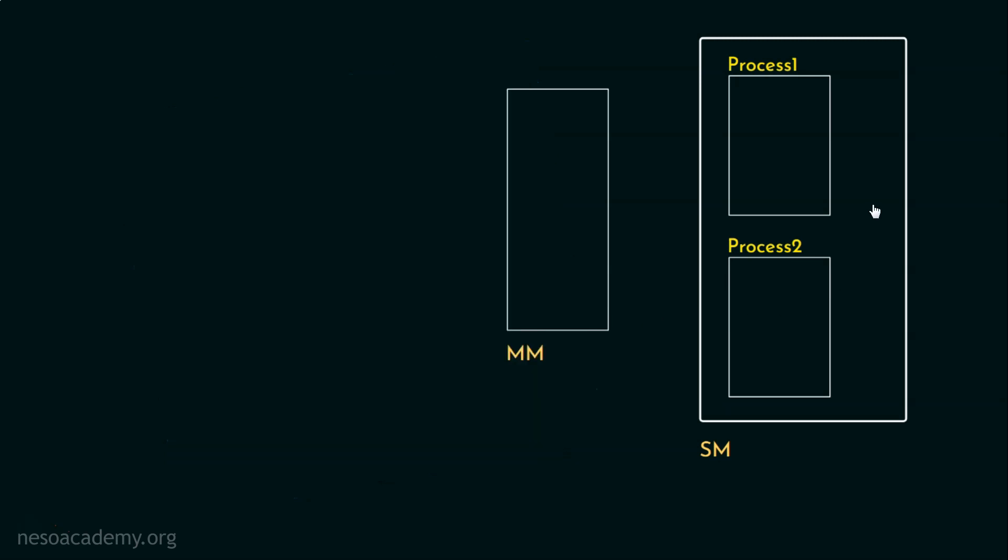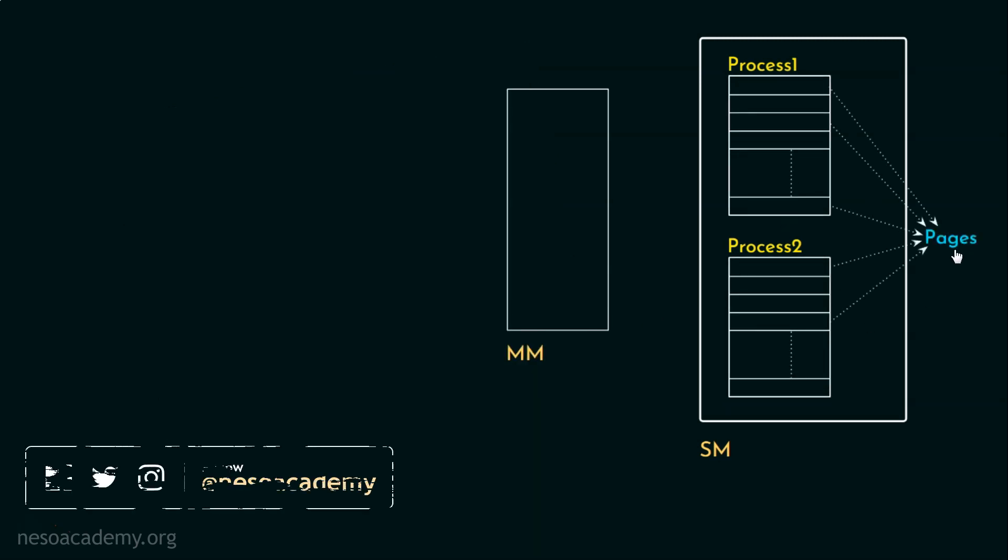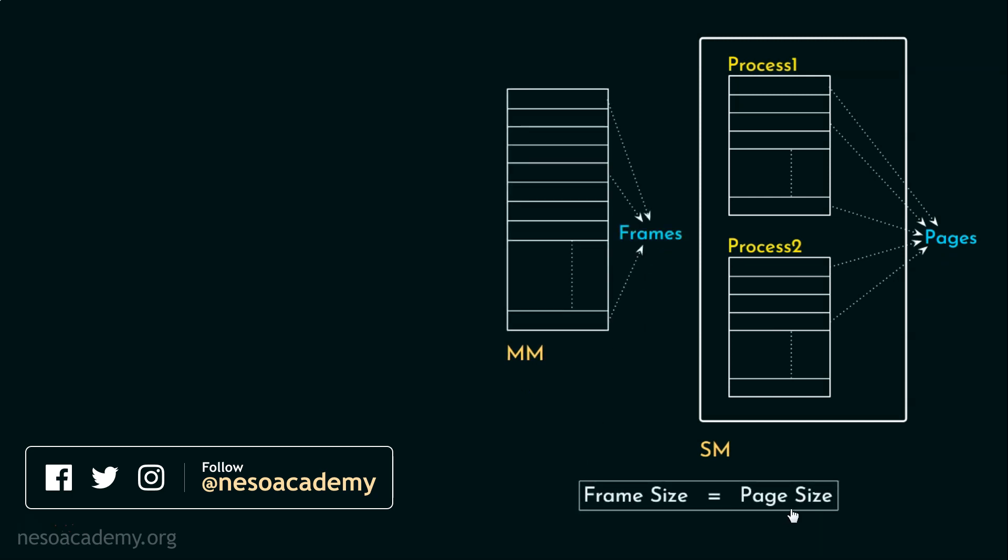Every process is subdivided into equal sized pages. Likewise, the main memory is also split into equi-sized frames and the size of each frame is the same as the size of each page. The process of subdividing the processes into pages and then bringing them into the main memory is the job of the operating system. For the details of that, you can refer to our beautifully presented operating systems course. But for today, we are here to learn about how the elements are brought from the main memory into the cache memory.